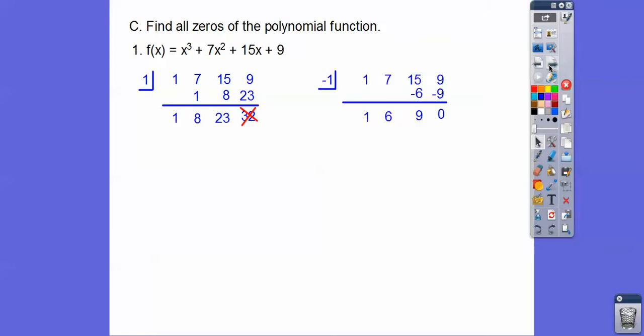Let's try negative 1. There's a zero right there, so negative 1 is a root. Now we're going to solve the condensed quadratic equation, just like the last lesson. So we have x squared plus 6x plus 9 equals 0.